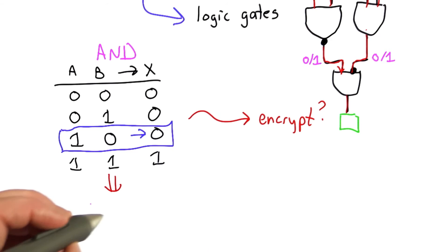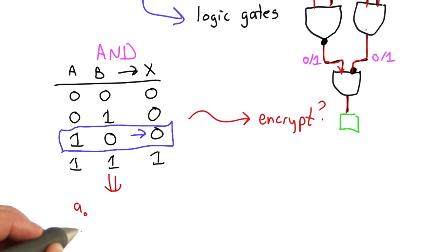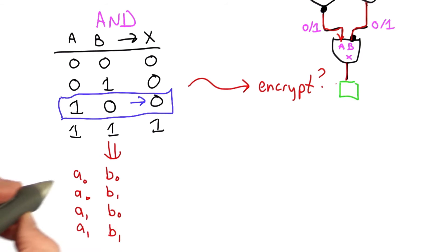We're going to pick some random value to represent 0 on this wire, call that A0. We'll pick some random value to represent 1, call that A1. And we'll do the same thing for the other wire and the output.